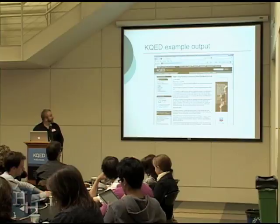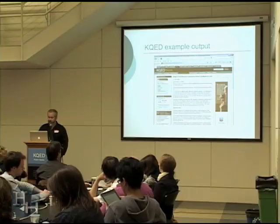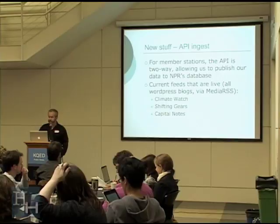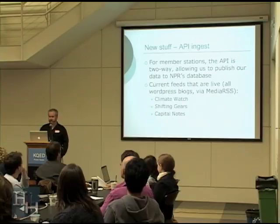This is an example of a story as it renders right now. We haven't yet incorporated images or audio in our site, but that's coming soon. The most recent development is the Ingest method — right now only member stations are using this, but there may be a future where it's more open to everybody. We're currently publishing all of our news-oriented WordPress blogs to the API via Media RSS — Climate Watch, Shifting Gears, and Capital Notes — all that data is going back to NPR as well.